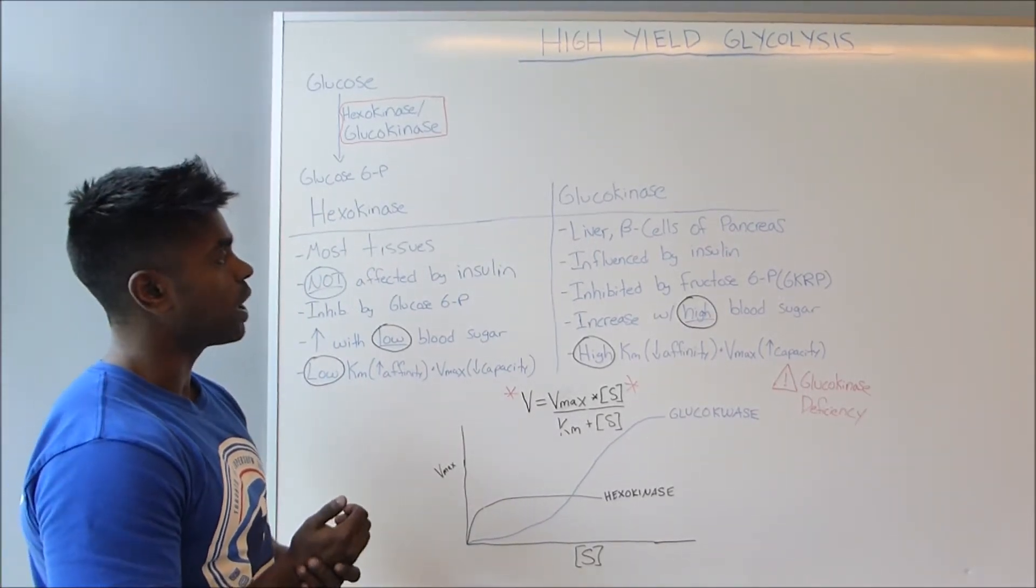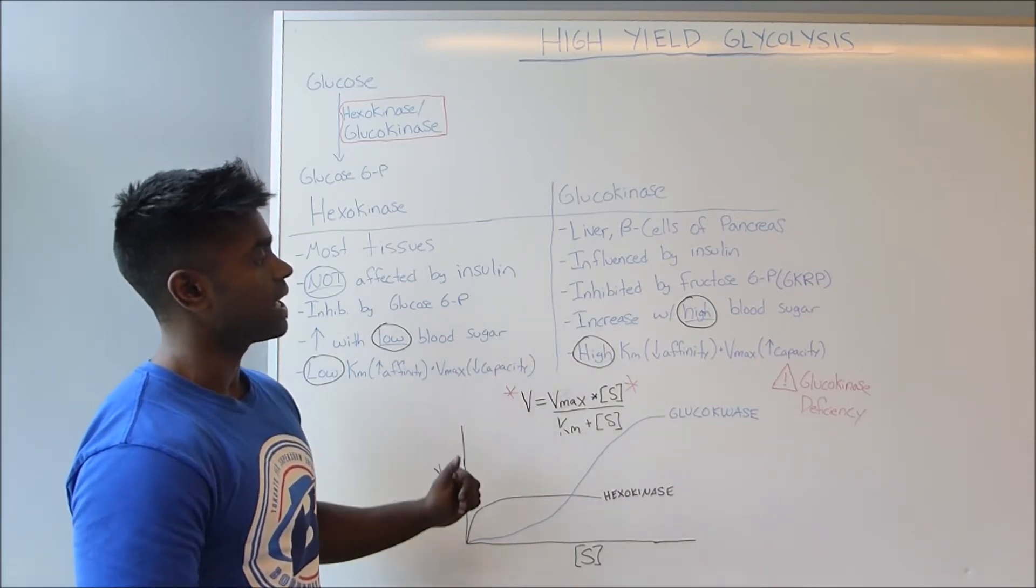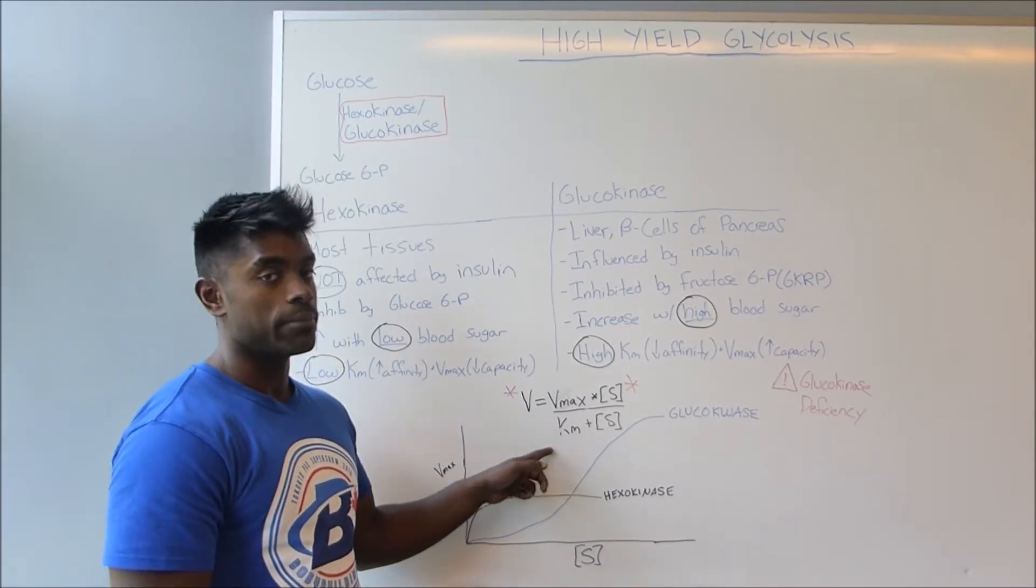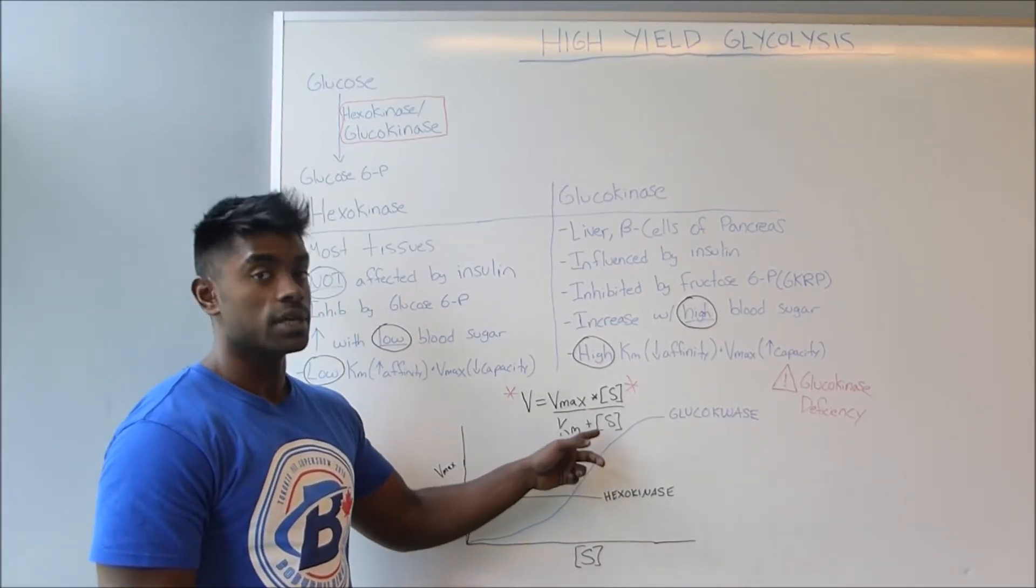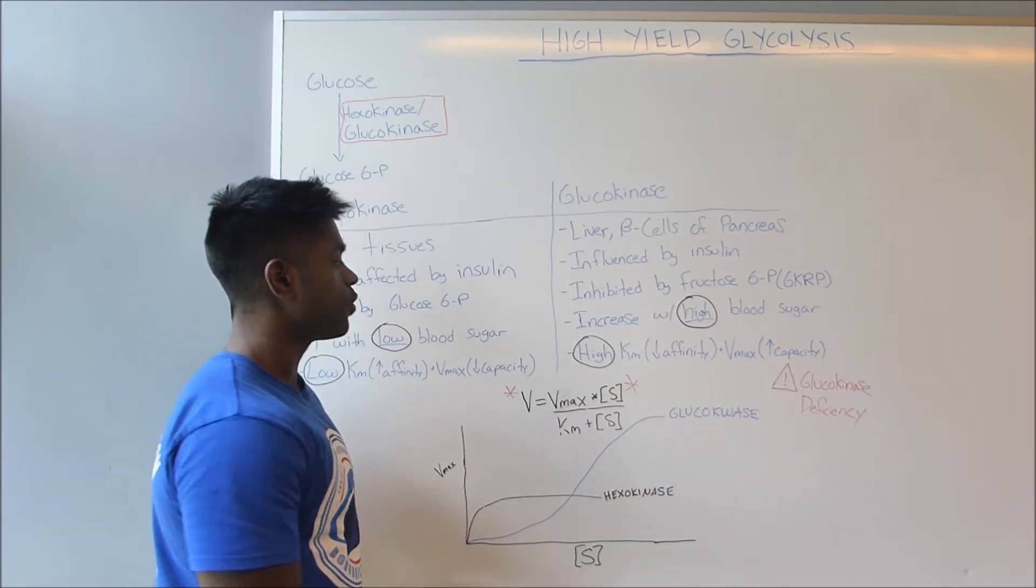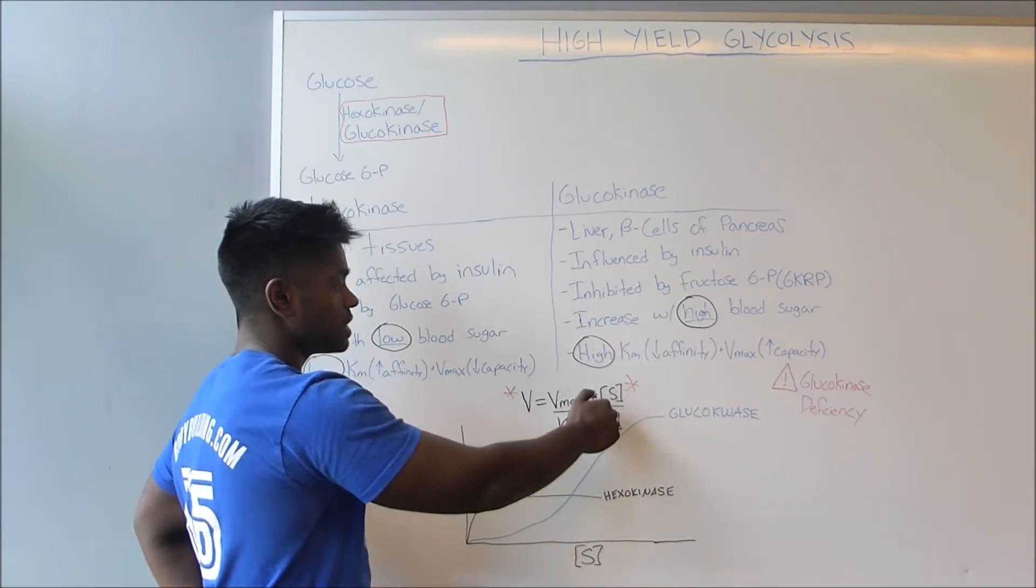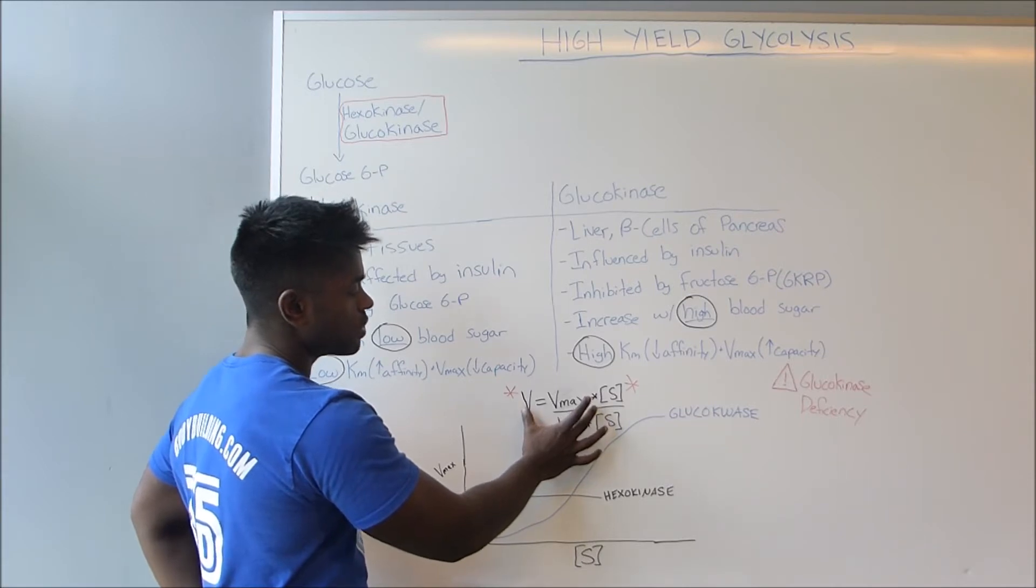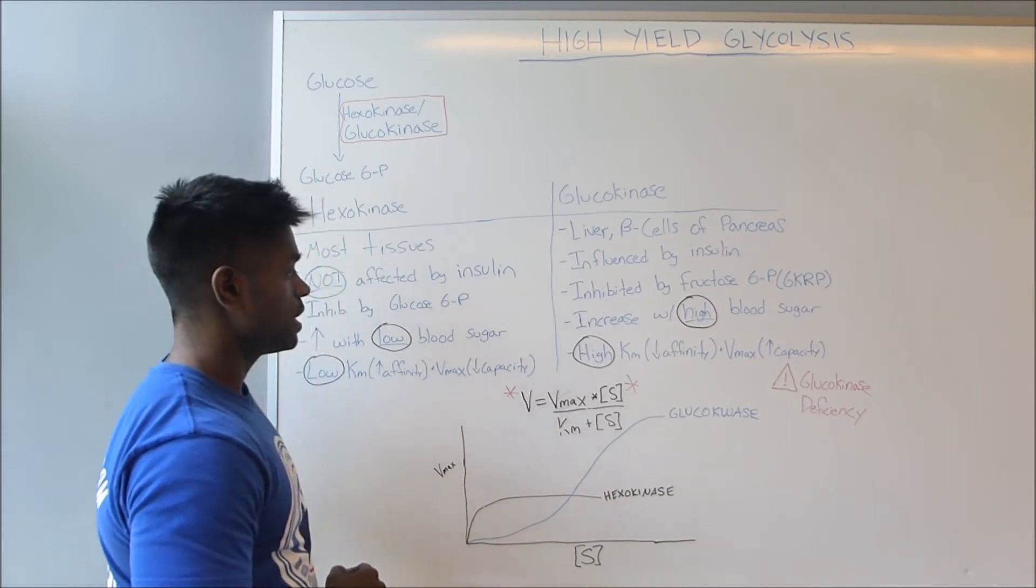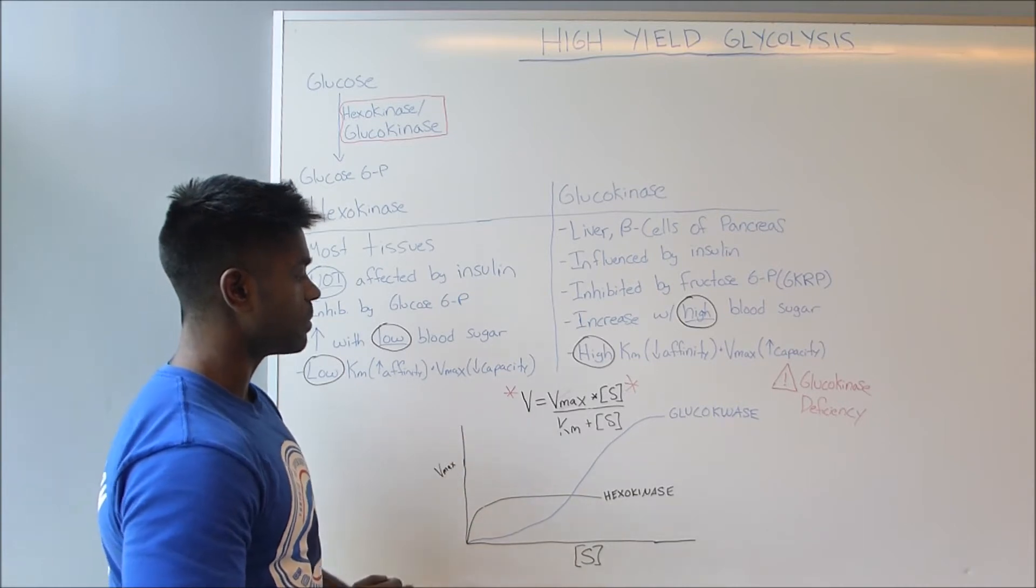Now, if we use the same logic when we approach the enzyme glucokinase, which has a high Km or a low affinity, we can also understand that since there's a high Km, we're going to need a much larger amount of substrate in order for this Km to seem insignificant. So therefore, once this high amount of substrate is present, we can cancel those out and then V equals Vmax. So therefore, the Km is going to be larger and the substrate concentration is also going to be larger in order to reach the Vmax.